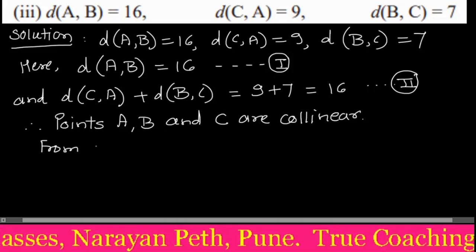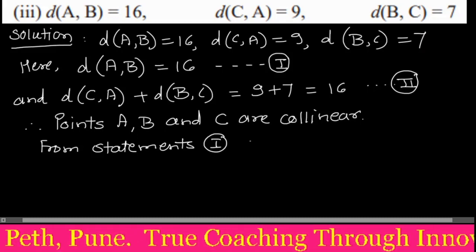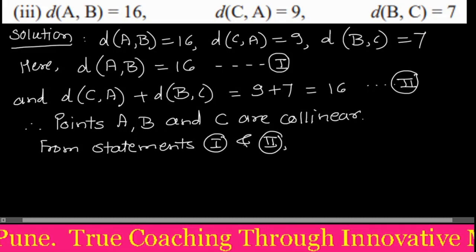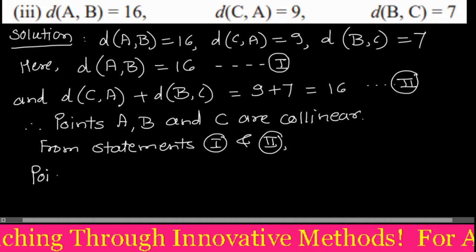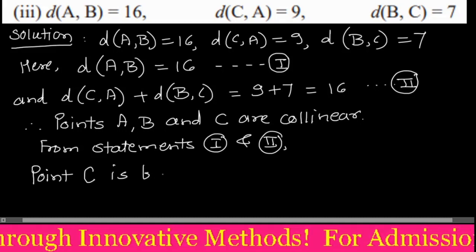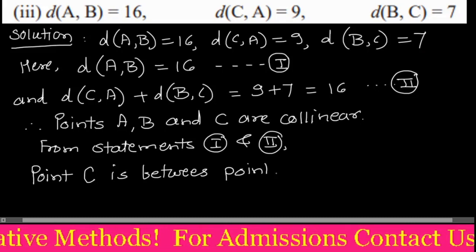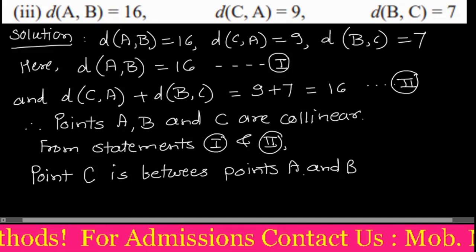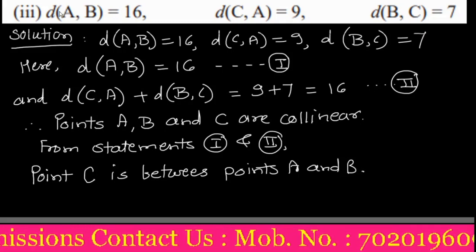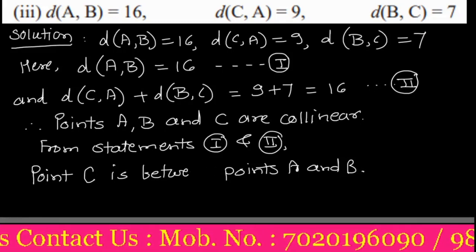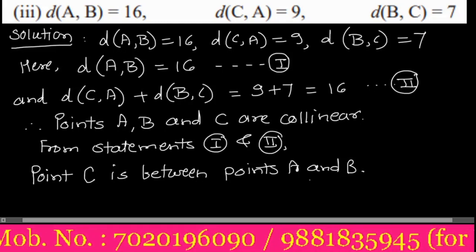From statements 1 and 2, point C is common in the sum of the distances, so we can state that point C lies between points A and B. Therefore we have found the betweenness of points A, B, and C.